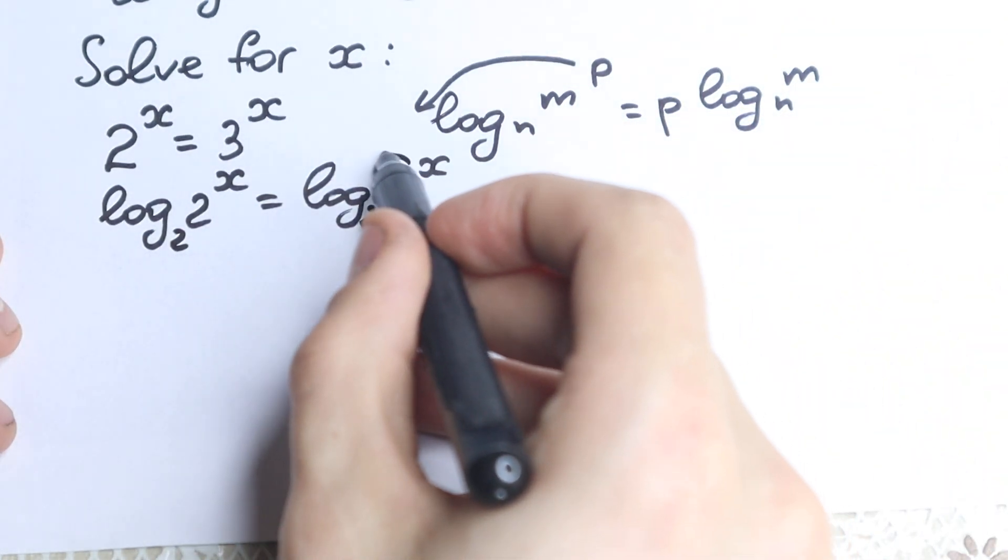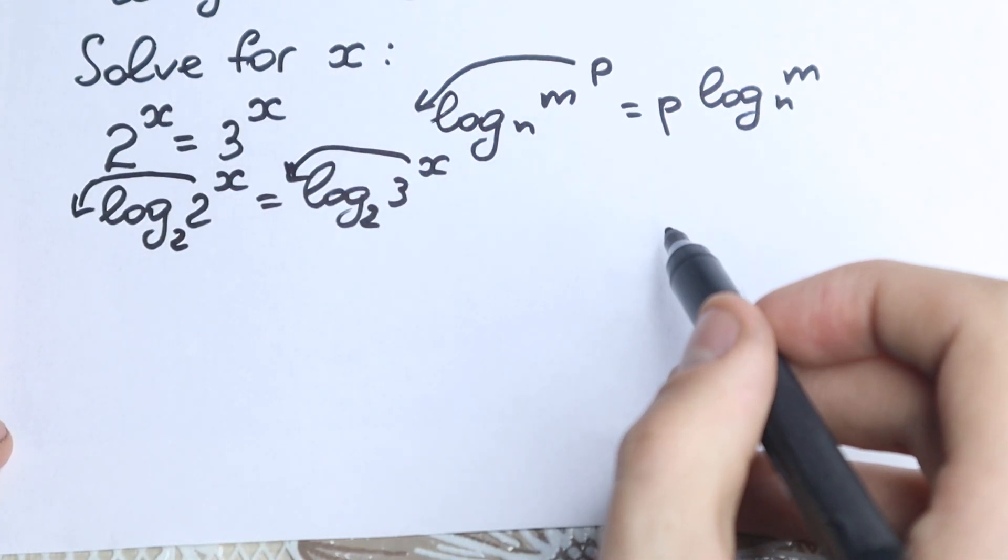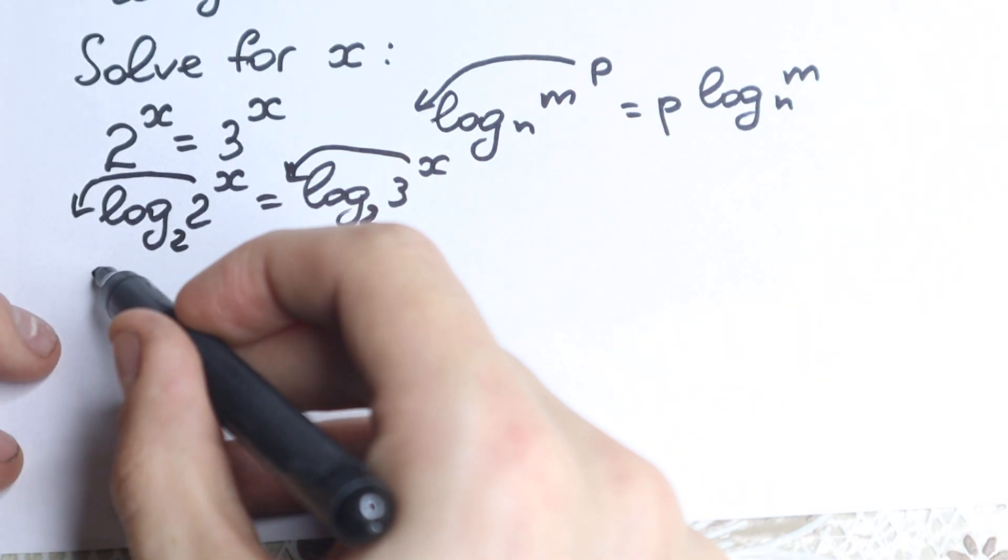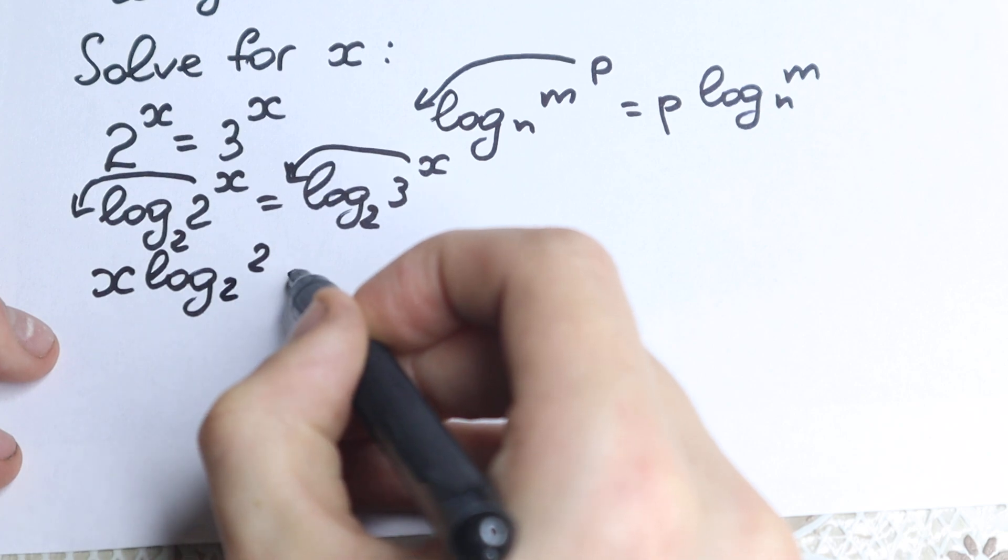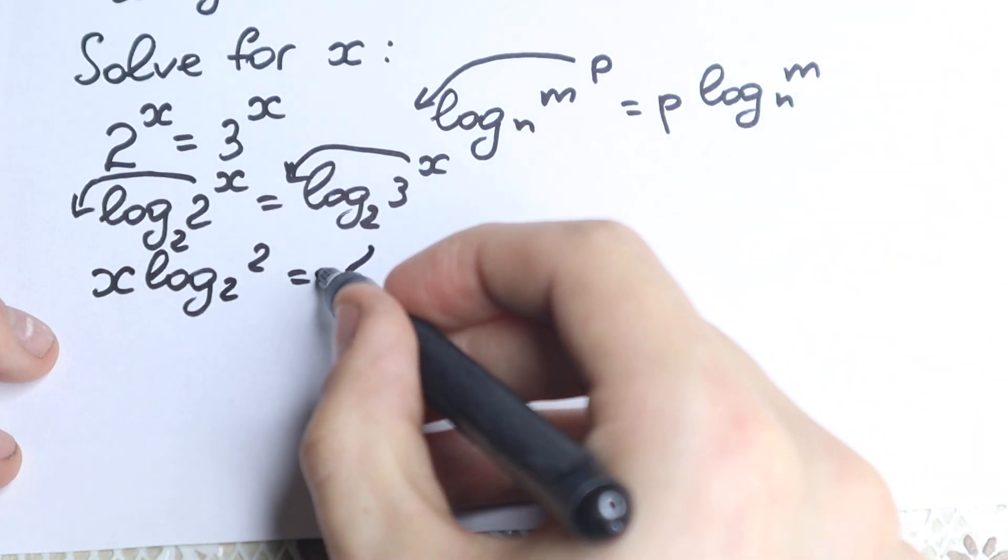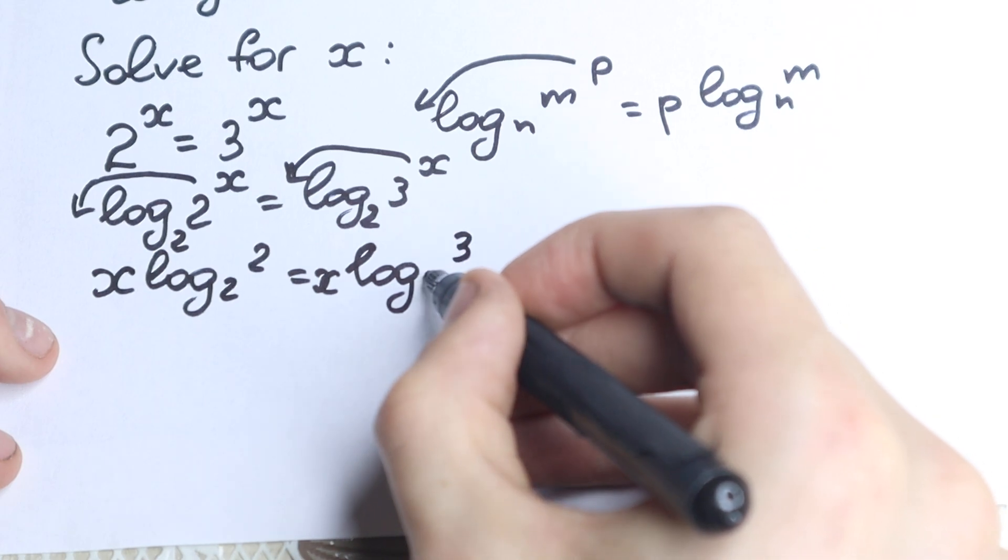As I told before this x jumps in front and this x jumps in front. This is our first step we really need to know. So we have x log base 2 of 2 equals x log base 2 of 3.